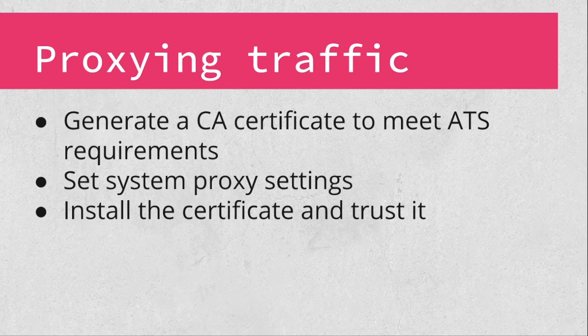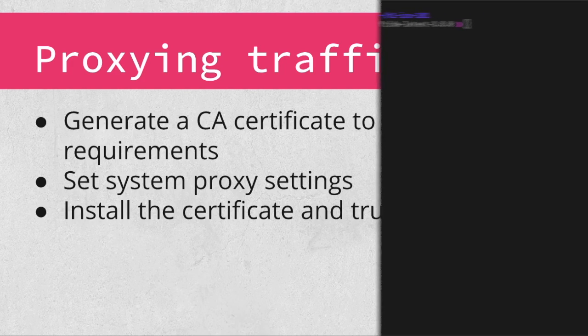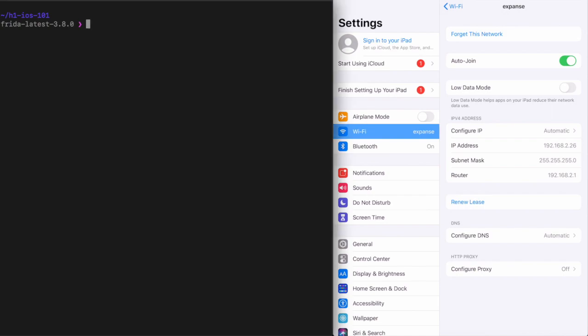An important aspect to examining any application is analyzing the data it sends and receives on the network. Proxying an iOS application is a little bit different than proxying with a browser, mostly due to the additional steps required to establish the certificate as trusted. Let's walk through the process of installing and trusting a CA certificate from Burp Suite as an example. I've already connected my jailbroken iPad to my computer over USB and started my Burp Proxy on localhost port 8080. I want to show you a trick you can use when working with a jailbroken device that is running an SSH server. First, I'm going to run iProxy in the background to forward traffic from port 2222 on my laptop over the USB connection to port 22 on my iPad.